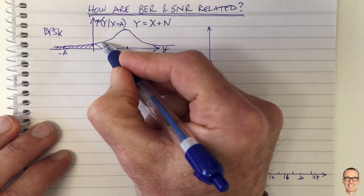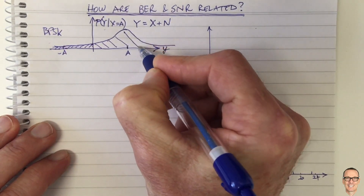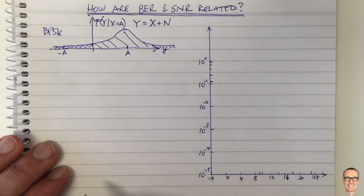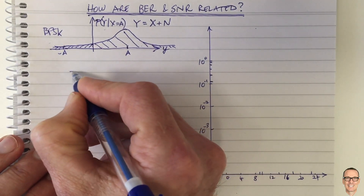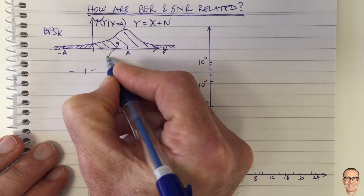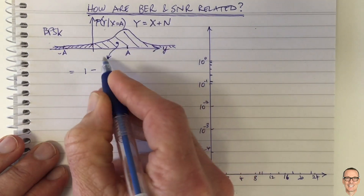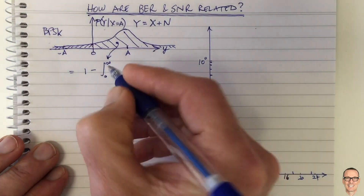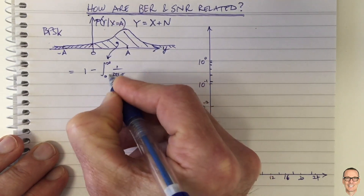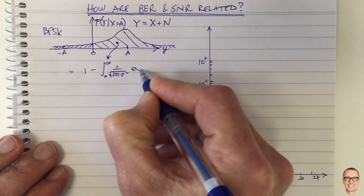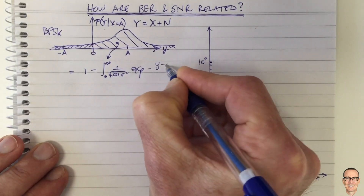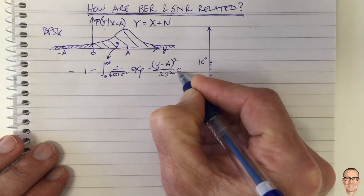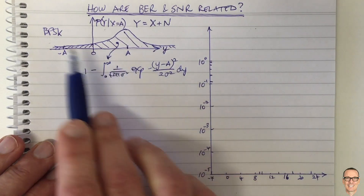The probability of error is also one minus this probability. So we could add up this area and do one minus that, and we'd have the probability of making an error. This is one minus the integral from zero to infinity of a Gaussian: one divided by the square root of two pi sigma squared, times the exponential of minus (y minus A) squared divided by two sigma squared, dy. This is the probability of error in BPSK.